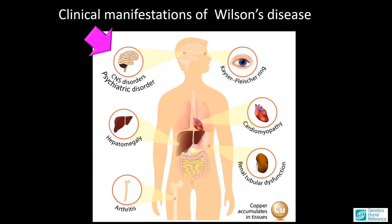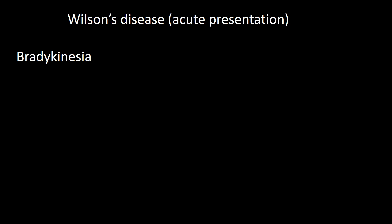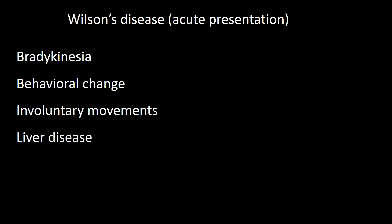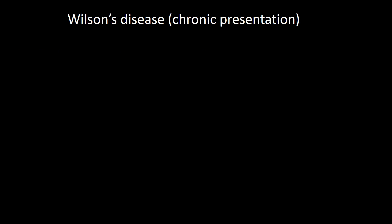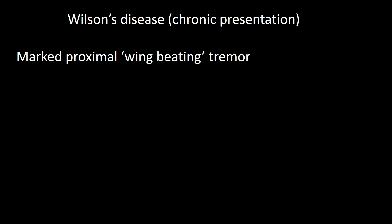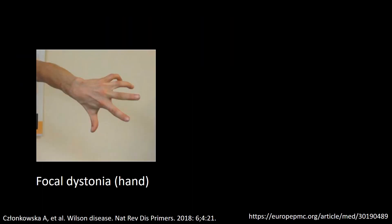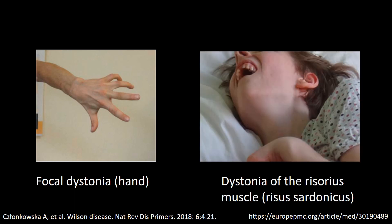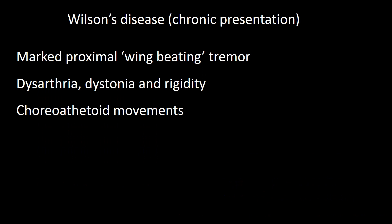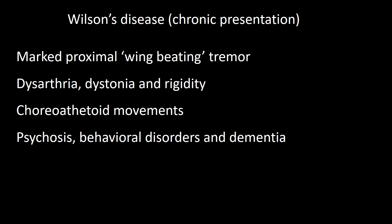Brain pathology is common and often predominates. In the acute form, Wilson disease presents with bradykinesia, behavioral changes, involuntary movements, and liver disease. The chronic form consists of marked proximal wing-beating tremor, dysarthria, dystonia and rigidity — hand dystonia being the most frequent — later developing focal dystonia involving the rissorius muscle, called risus sardonicus, as well as choreoathetoid movements, psychosis, behavioral disorders, and dementia.